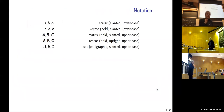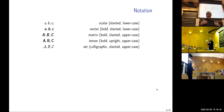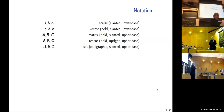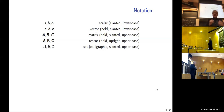Our notation: we'll use scalars, vectors, matrices — typically two-dimensional — and tensors. A tensor is simply a matrix of arbitrary dimension — nothing really fancy, nothing to be afraid of, just an arbitrary higher-dimensional matrix. We'll also be talking about sets of objects.